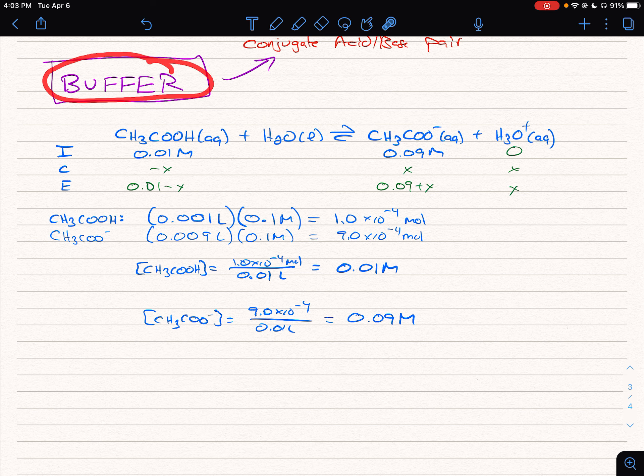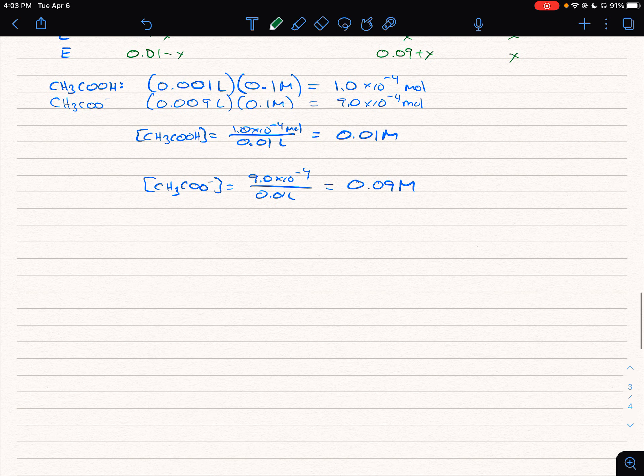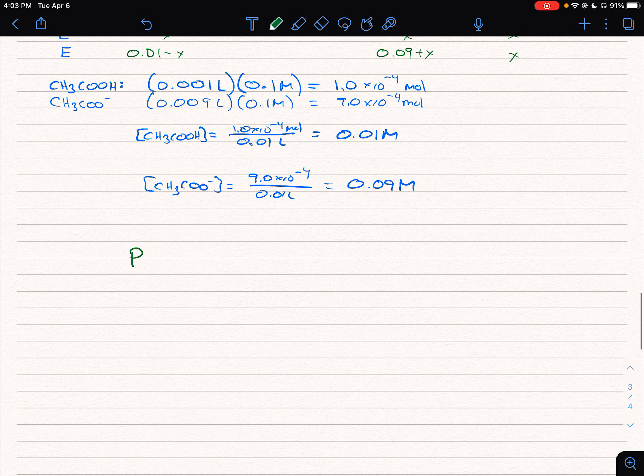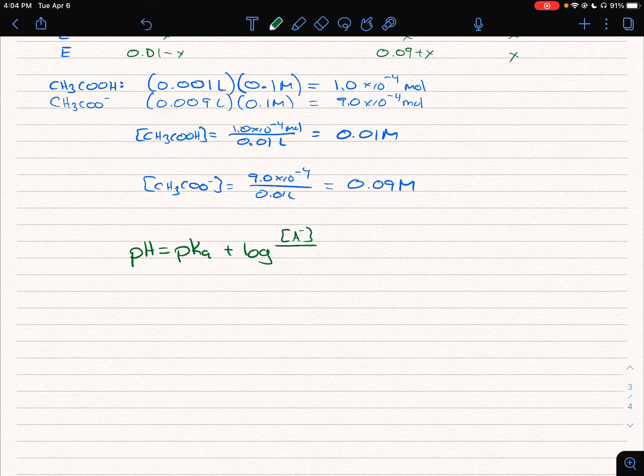We know it's a buffer solution because we have large amounts of weak acid and its conjugate base both present at the start of the reaction. So once we see that, we can go ahead and consider using the Henderson-Hasselbalch equation where the pH equals the pKa plus the log of the concentration of the conjugate base over the conjugate acid.